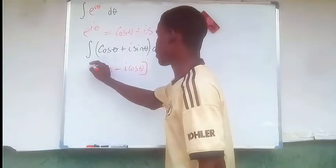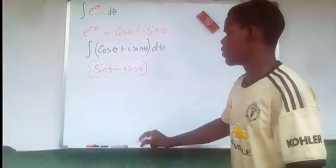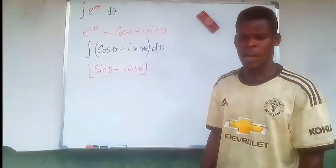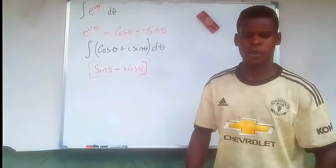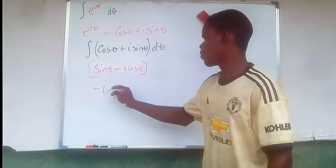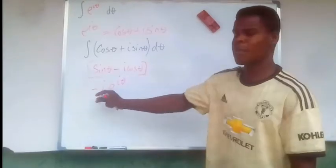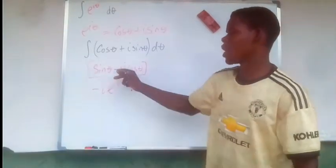That's the integral right here. Now I want you to notice that sine theta minus i cosine theta is the same thing as saying negative i times e to the power i theta. So you multiply e to the power i theta by negative i, you're going to have this.